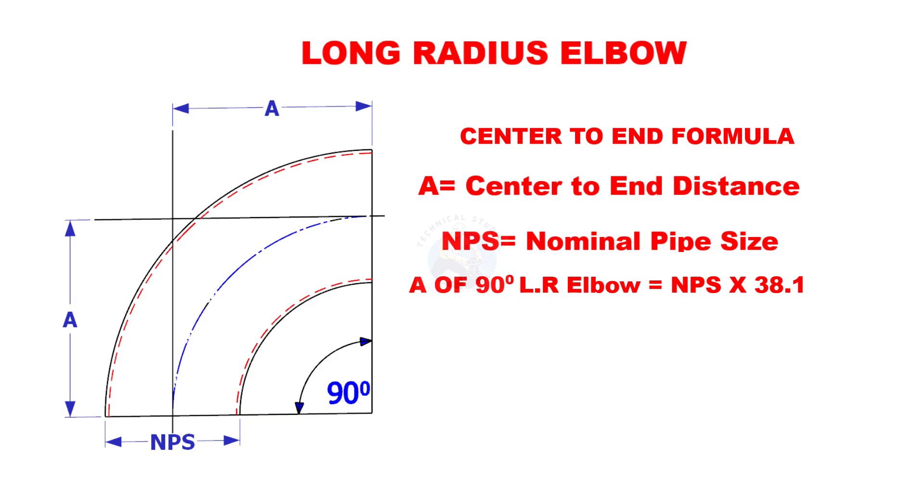A of a 90 degree long radius elbow is nominal pipe size multiplied by 38.1. Here 38.1 is a constant.